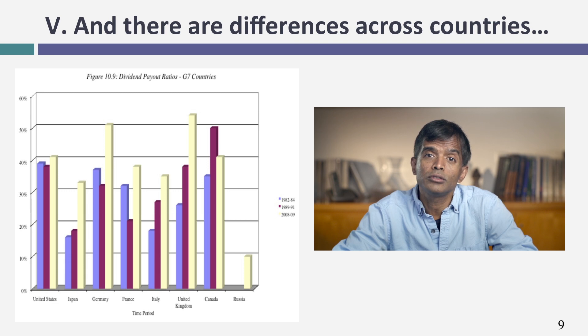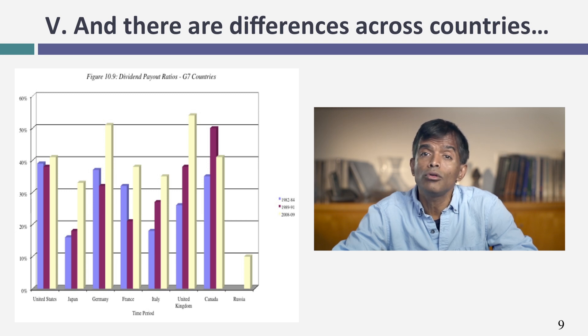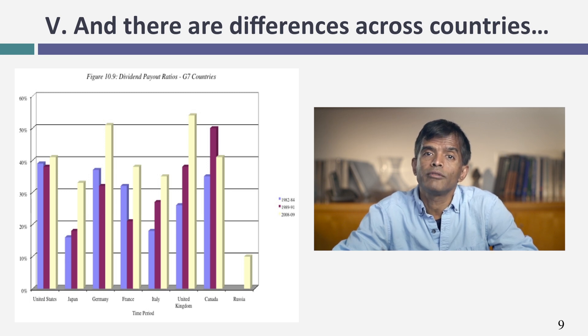Looking across countries, you notice big differences in dividend policy. UK and Australian companies have tended to pay more dividends than companies in other countries. In the United Kingdom and Australia, investors are allowed to claim a tax credit when they receive dividends for taxes the company might have already paid — so a stockholder might actually pay no taxes on dividends. The tax laws are tilted towards dividends, and not surprisingly you see more dividends paid in both countries. In Russia, far less is paid out in dividends — I think because of poor corporate governance. Managers left to their own instincts will tend to hold on to cash, because once they pay it out, they don't control it anymore. So in countries with weak corporate governance, I would expect to see far less paid out in dividends.